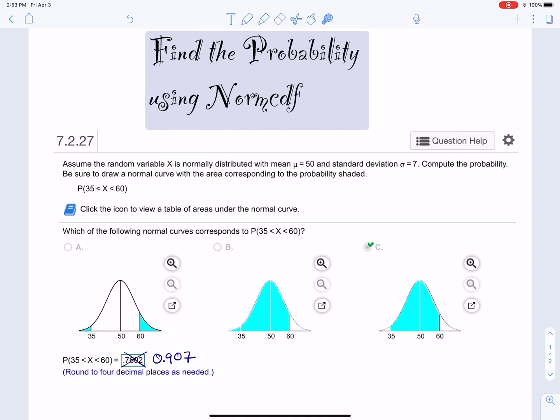That's why we can use norm CDF. And this is on our calculator TI-84, TI-83. Notice that we're going to pick this graph here because it's saying between 35 and 60. So we want this graph here. You guys should know how to graph that.